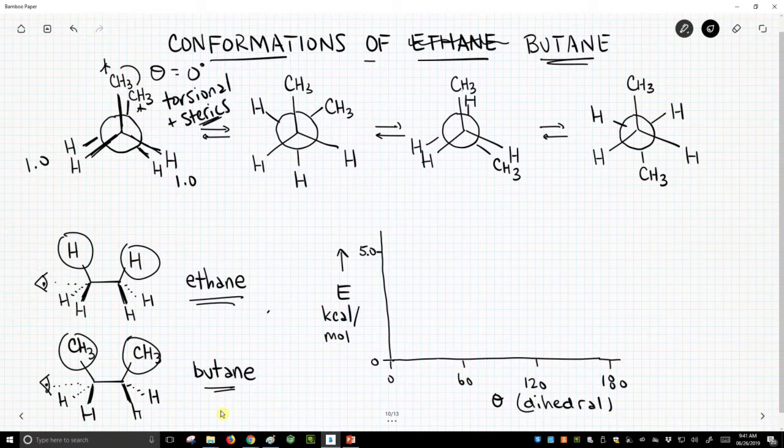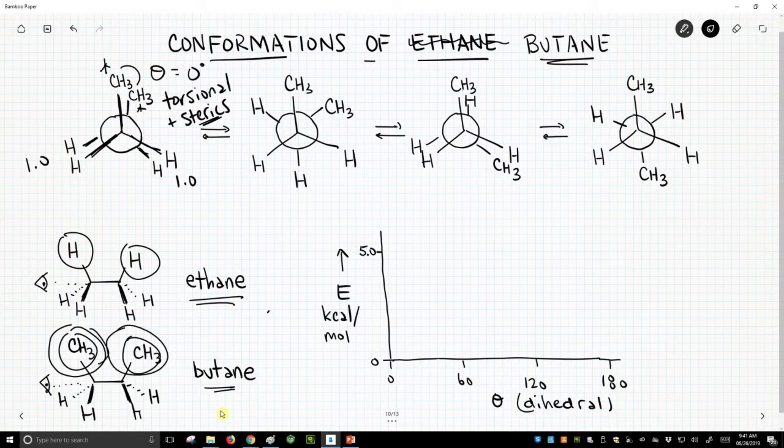Sterics arise when groups physically come in contact with each other. I'm going to go down to our bottom picture, bottom left, and these methyl groups, they're pretty big, and they actually kind of bang into each other. That's a high energy state. The energetic cost of eclipsing these two methyl groups is 3.0 kcal per mole. It's a combination of torsional strain and steric strain. That gives us a total energy for that eclipsed conformation of 5 kcal per mole.